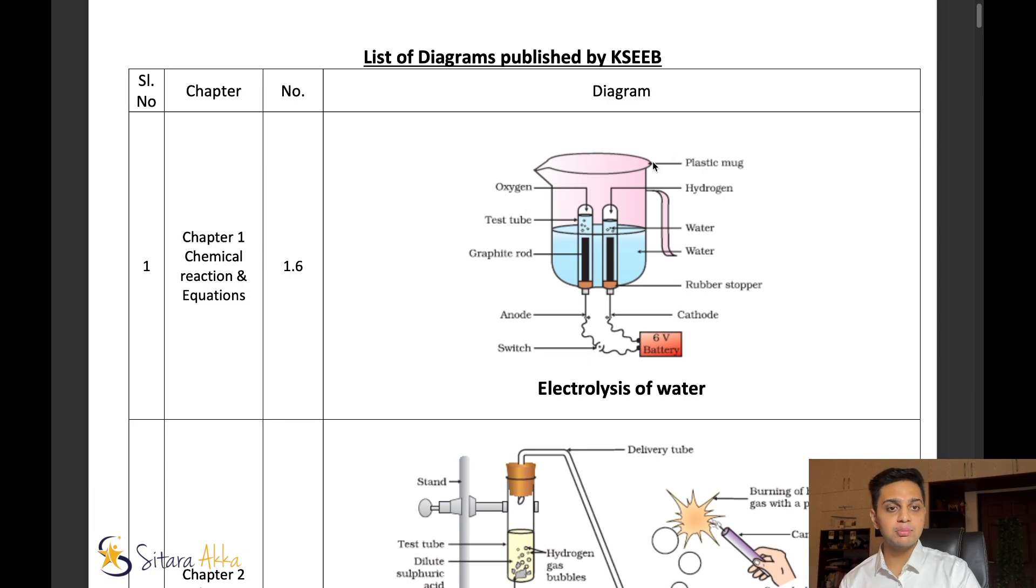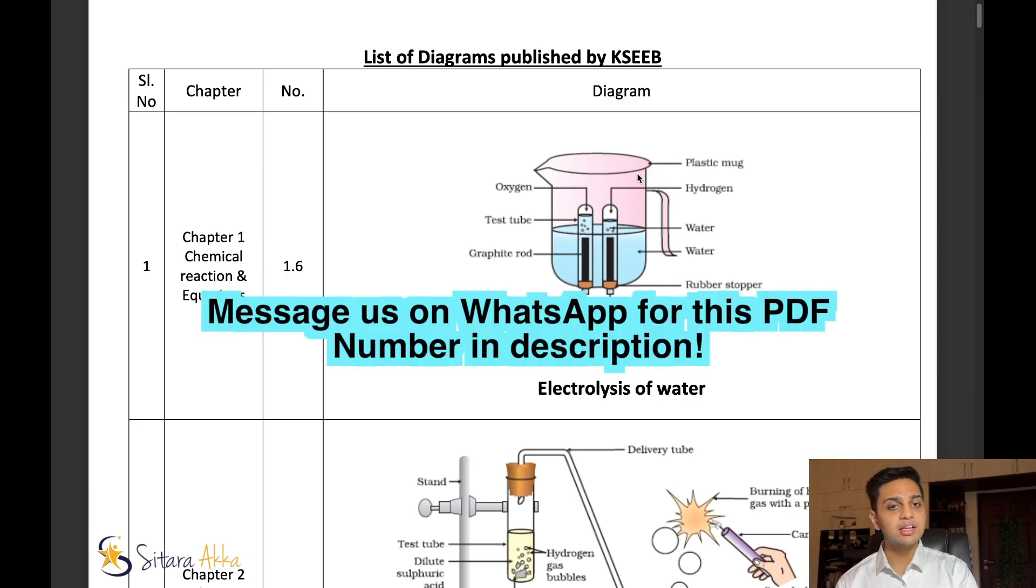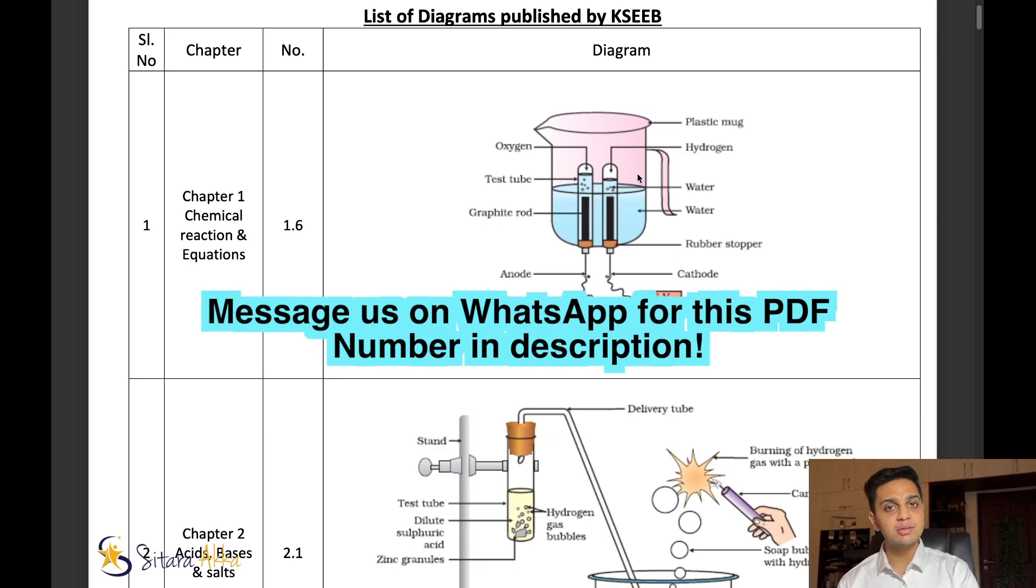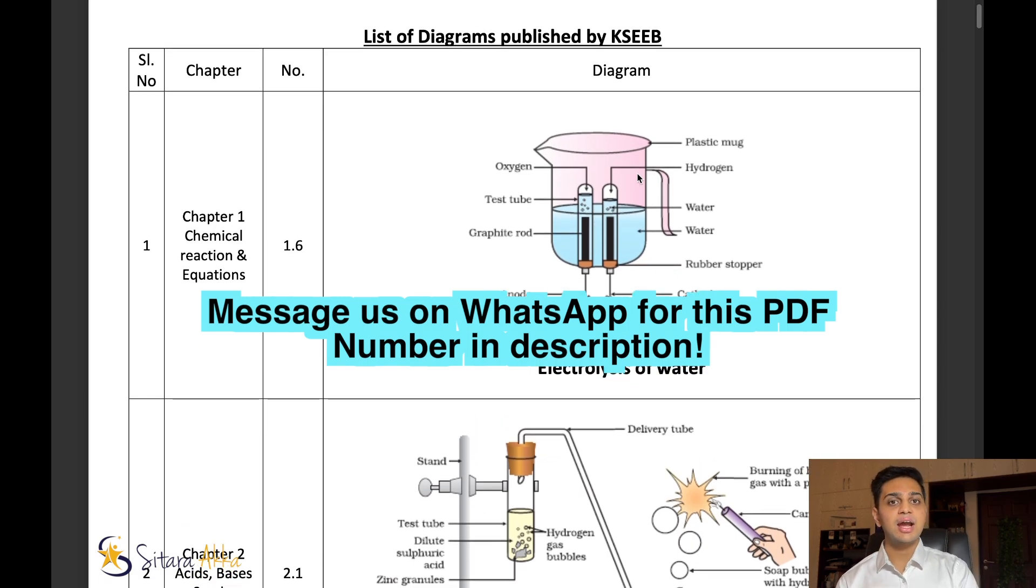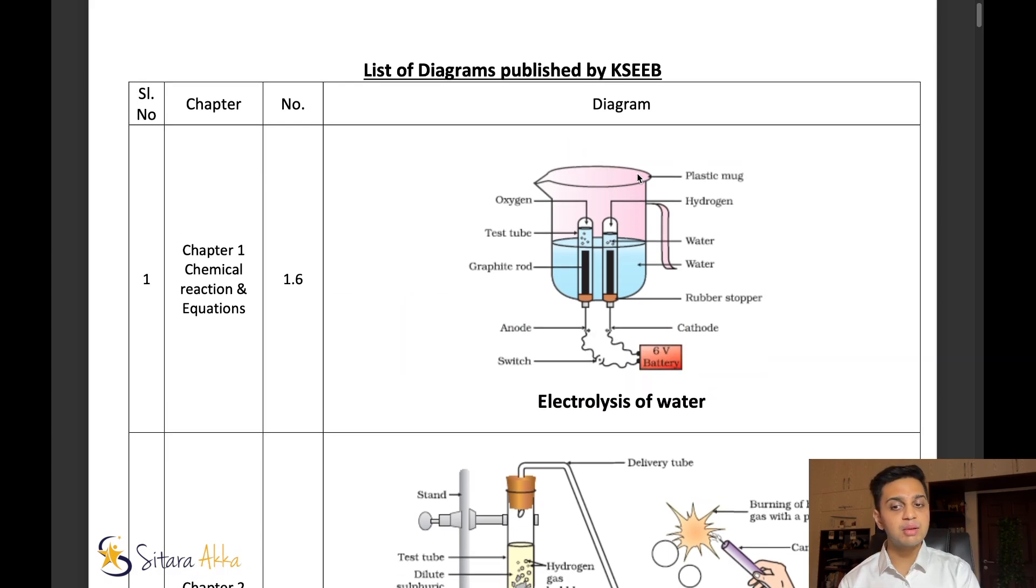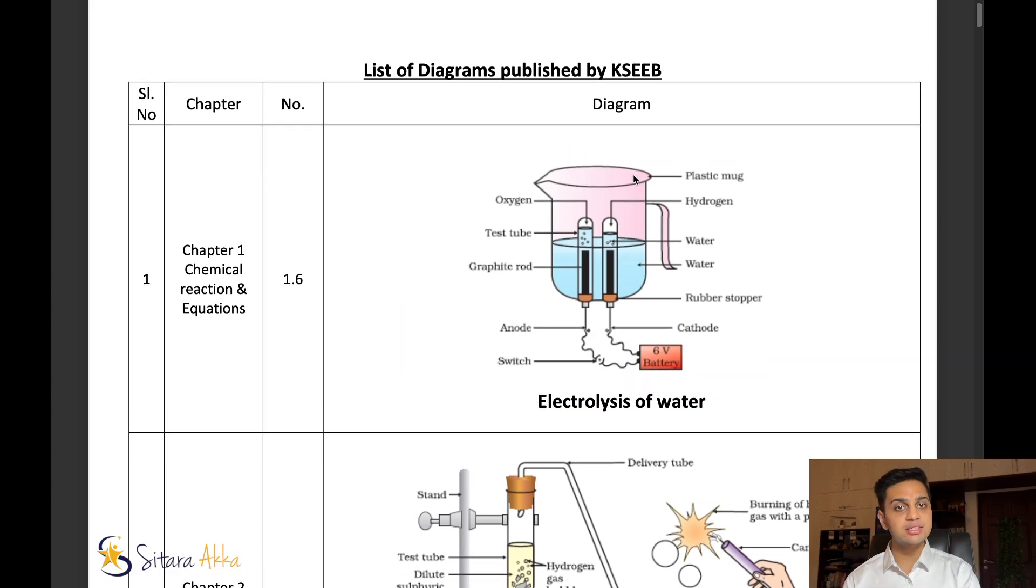This resource is published in KSEMI. In this video, we will look at the list of diagrams for all of the chapters. We will try to understand which diagrams are important and which diagrams need labeling. In the first chapter, there are six important diagrams.